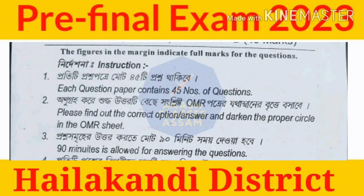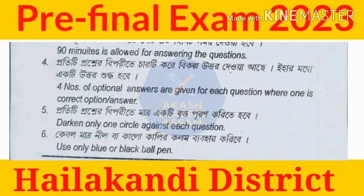The second question is given 44 minutes, then you will be able to find out the answer in 14 minutes. One number is given for each correct answer. Please find out the correct option. There is only one circle against each question. We can use only blue or black ball pen.